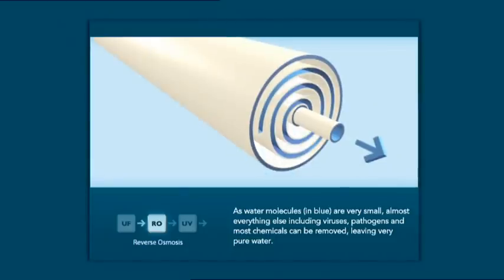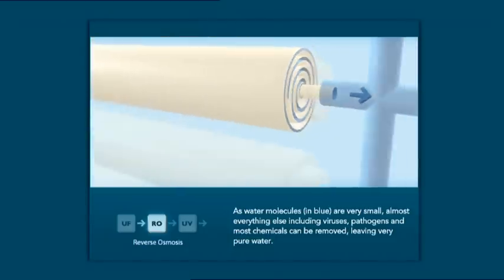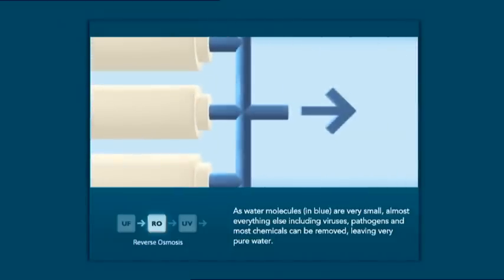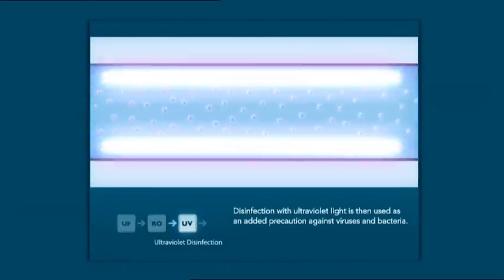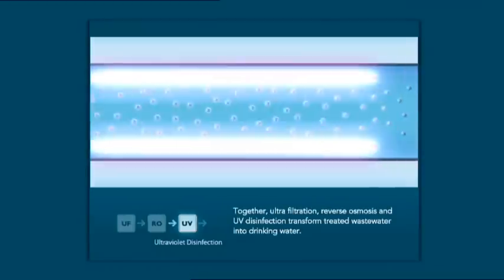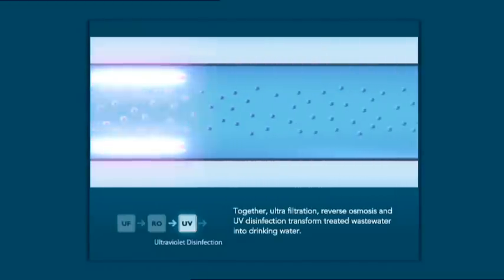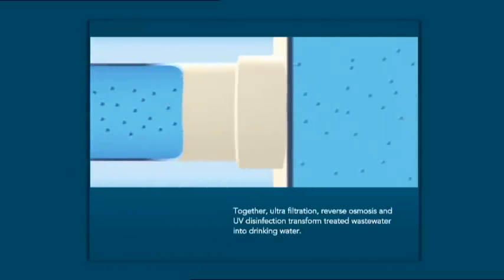The membranes channel the clean water into a central pipe and on to the final stage of the treatment process. Ultraviolet light is then used as a final step to disinfect the water. And so we're left with water that can be safely added to drinking water supplies.